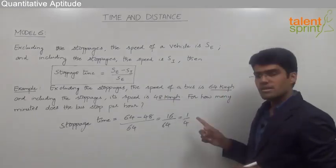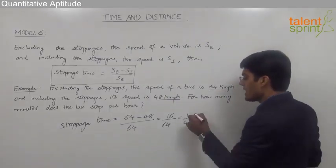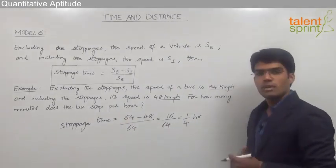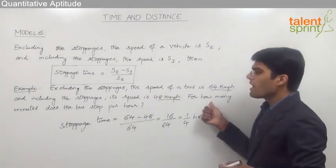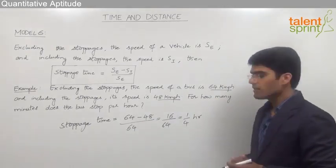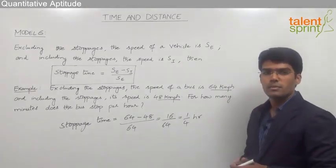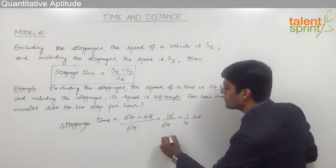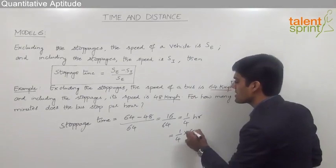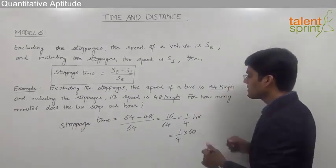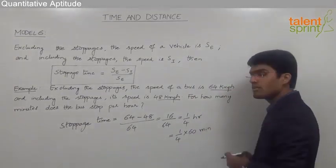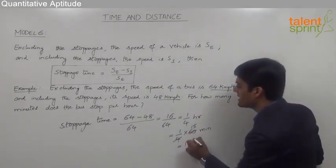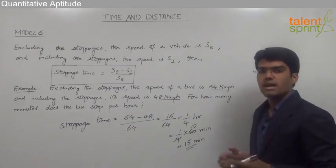Because the speed is given in kilometers per hour, the stoppage time is one-fourth of an hour, i.e., 1/4 hours. Since the question asks for minutes, we convert by multiplying by 60, because each hour has 60 minutes. So 1/4 into 60 gives 15 minutes. The bus stops for 15 minutes every hour.